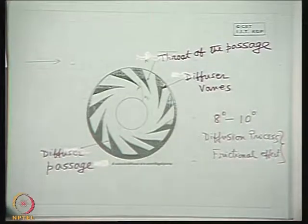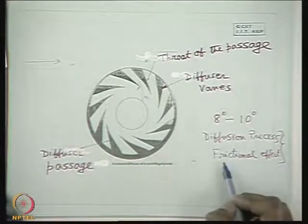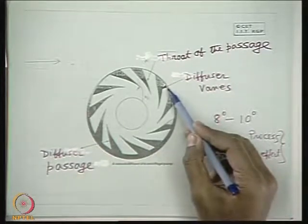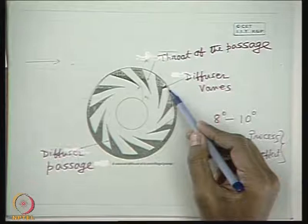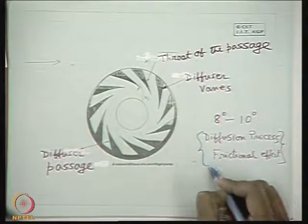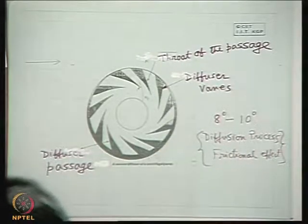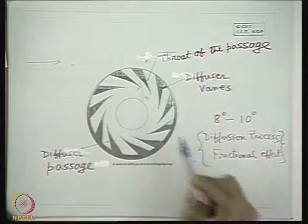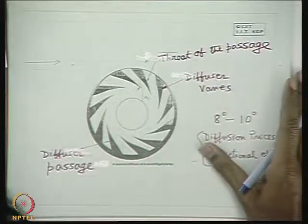If we have more diffuser vanes, the process of diffusion — conversion from kinetic to pressure energy — will be better, but frictional losses will be more. If we have fewer vanes, frictional losses will be less but conversion will not be as effective. These two counteracting phenomena decide the number of vanes. Additionally, the number of diffuser vanes should not have any common factor with the number of impeller vanes, to avoid resonant vibration.